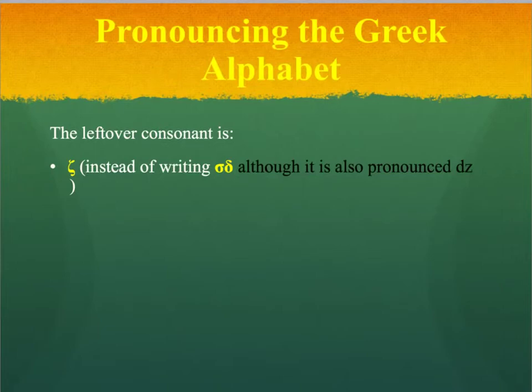Our final consonant is Zeta. This is a combination consonant of Sigma and Delta. It's pronounced both ZD and DZ, so you'll hear people doing it both ways.